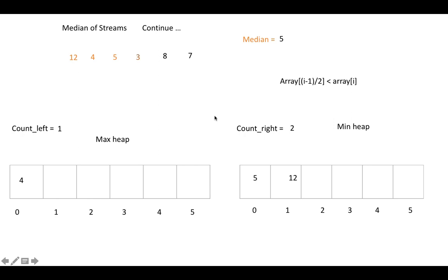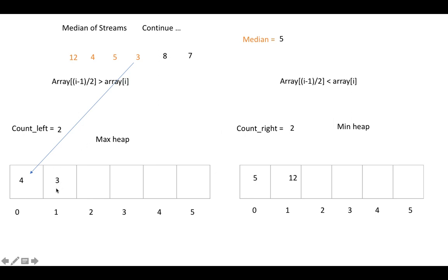Next, element 3 arrives. We compare with the max heap root, which is 4. Since 3 is less than 4, we store it into the max heap. We then check the max heap property: array[(i-1)/2] must be greater than array[i]. Here array[0] = 4 is greater than array[1] = 3, so no swapping is needed. The max heap property is satisfied.